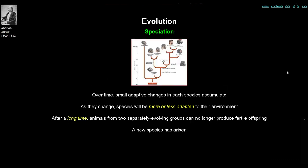So there are more animals around than can survive, and some are more adapted than others to their current environment. But how does that result in completely different species? We are very different from chimpanzees, but at some point we must have come from the same animal. So how do species come to separate from each other?